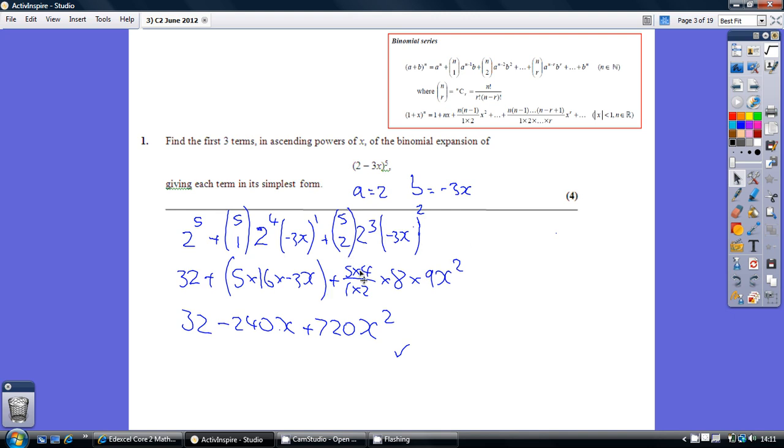I suppose the only other point of note, 5 choose 2 just means 5 times 4 over 1 times 2. So basically pop these into your calculator, and you get these three terms.